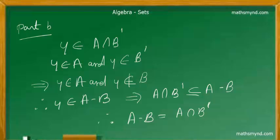Now if Y is an element of B complement, naturally Y cannot be an element of B. So that leads to the conclusion that Y is an element of A minus B. Which implies that A intersection B complement is a subset of A minus B.